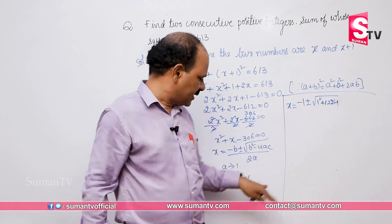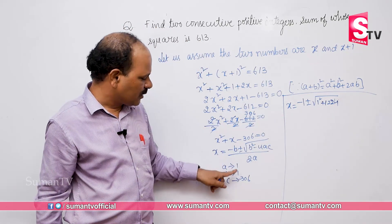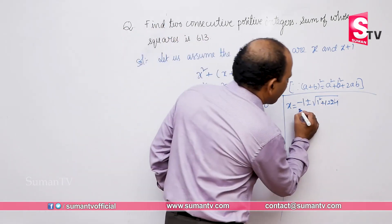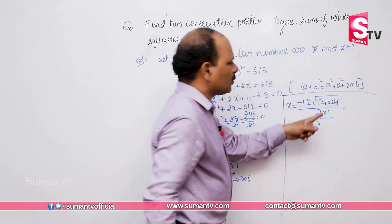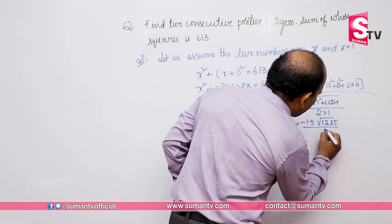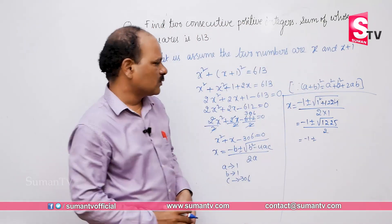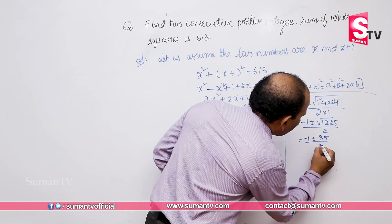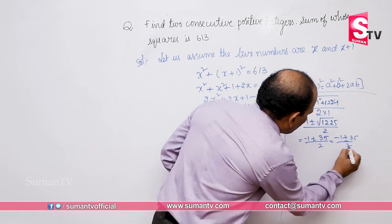Substituting: X equals minus 1 plus or minus root of 1 square minus 4 times 1 times minus 306, all over 2 times 1. That gives: minus 1 plus or minus root of 1 plus 1224, which is root of 1225, divided by 2. The square root of 1225 is 35.